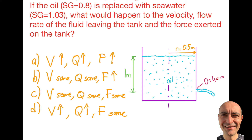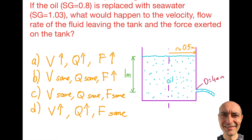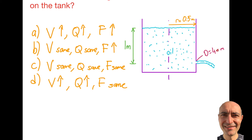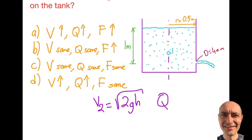I go to the FE reference manual, page 187 for the 10th edition, and I simply copy the equations. It says that V2 is equal to the square root of 2gh. Please go ahead and try to do this question on your own, because when I do this it seems like a simple question, but in reality it's not really like that. So please go ahead and do it yourself. As you know, Q is V times A, and the force is going to be Q times rho times V2.